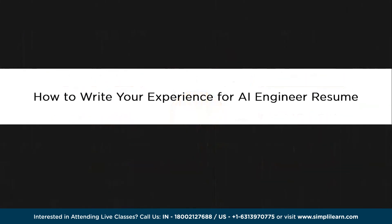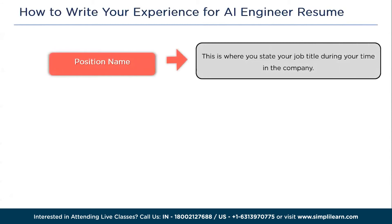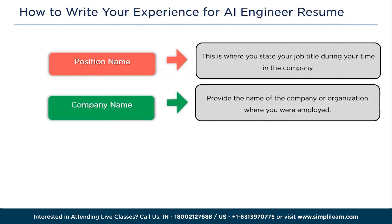Now let's discuss how to write your work experience for an AI engineer resume. You can structure it as follows: first, position name — state your job title, such as machine learning engineer or AI researcher. Then company name — write the name of the organization where you were employed. After that, dates — mention the period you worked in that position, including both month and year of your start and end dates.